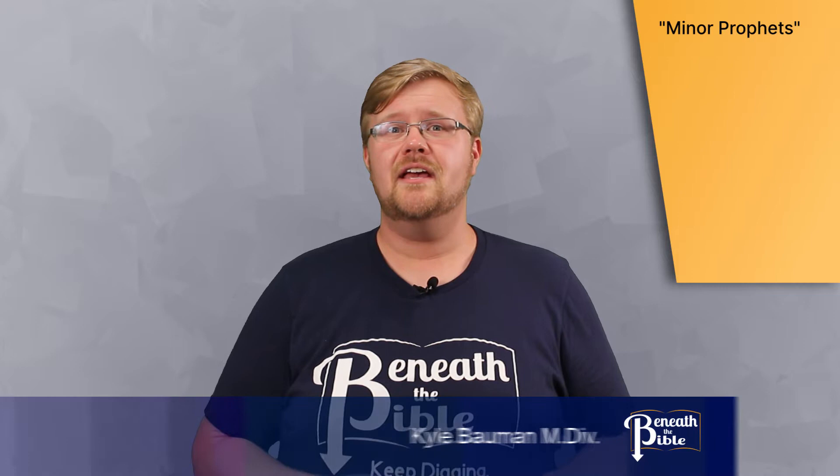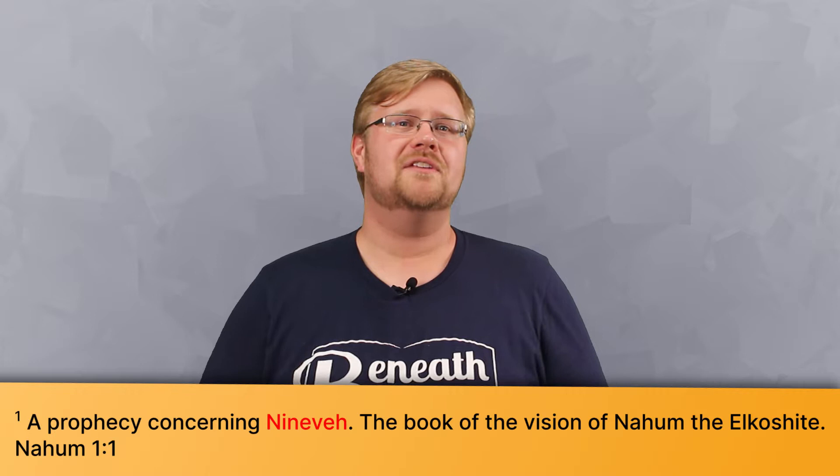Nahum is considered one of the minor prophets in the Old Testament. It is included in the Twelve, a collection of prophetic writings combined into one work in the Hebrew Bible and grouped with the Nevi'im, or prophets. The first verse of the book states that it is the oracle of Nineveh — a prophetic statement against the nation of Assyria, and more specifically against their capital city of Nineveh.